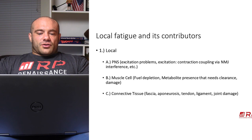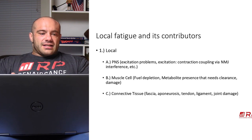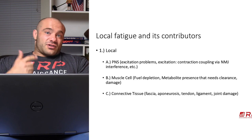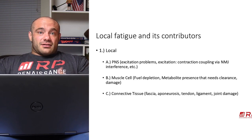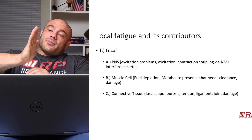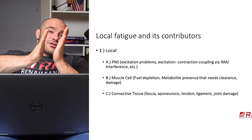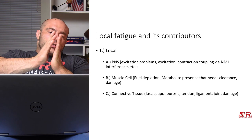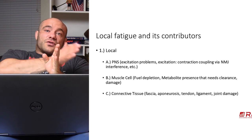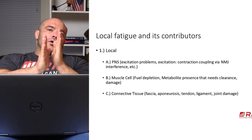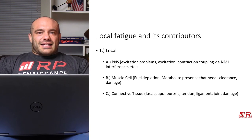Local fatigue has three separate components. The first is the PNS — the peripheral nervous system. The main focus is the nerve communicating from your spinal cord to the actual muscle, telling it to fire. There's a junction between the nerve and the muscle called the neuromuscular junction, where the nerve communicates through neurotransmitters — secreting chemicals into this junction — and those chemicals hit the muscle surface to tell the muscle to contract. That nerve, especially close to its end, gets tired in a variety of ways.